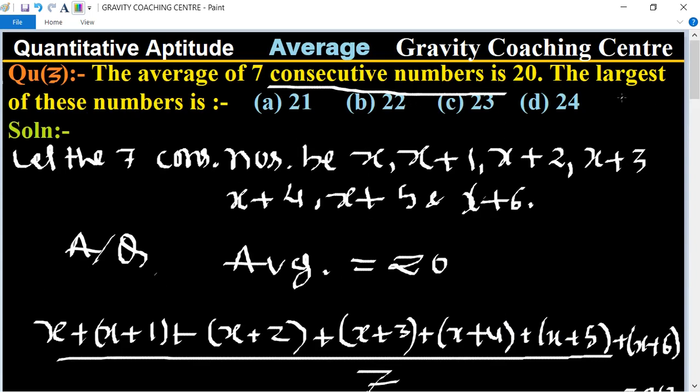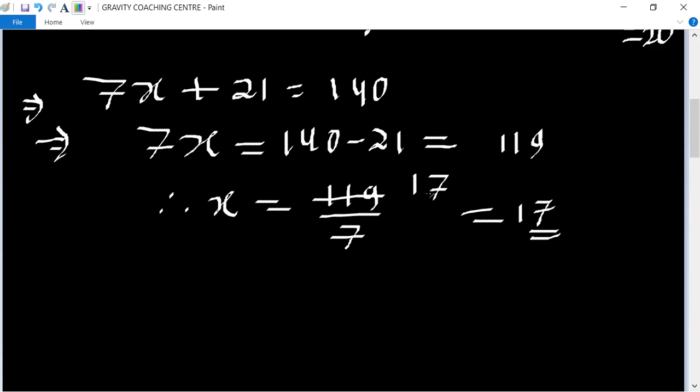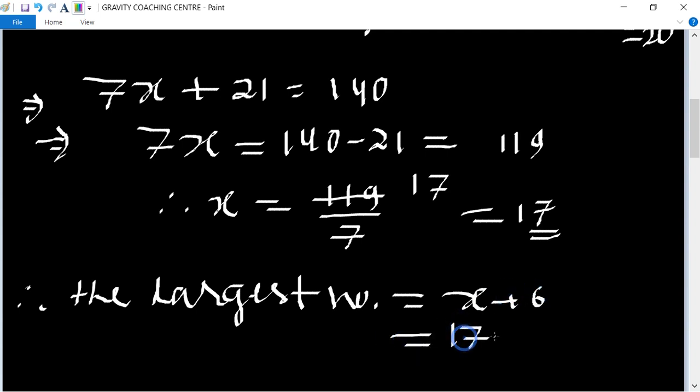Now we will find the largest number. The largest number is x+6. Hence, the largest number equals 17 plus 6, which equals 23. This is the required answer.